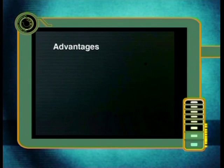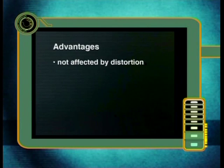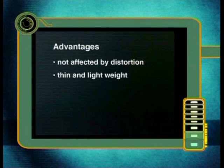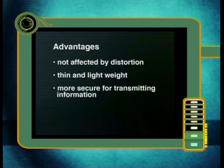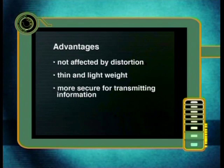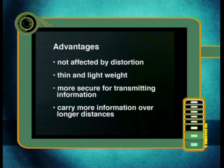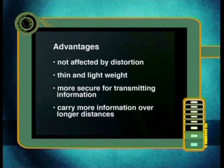An advantage of fibre optics is that light is less likely to be affected by distortion. Other advantages are that they are thin, and when bundled as cables they are thin and very lightweight, especially compared to copper cables. It is also difficult to tap into fibre optics, which makes them safer for banks and security companies. Even though fibre optic cables are more expensive than copper cables, they can carry a lot more information over much longer distances, making them more economical in the long run.